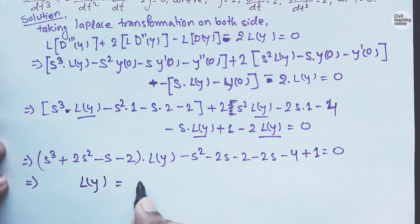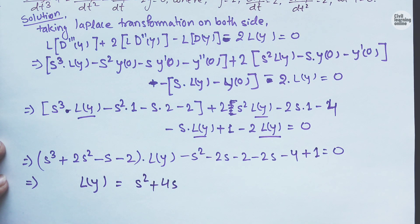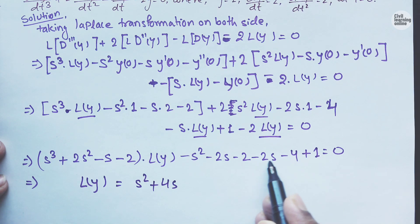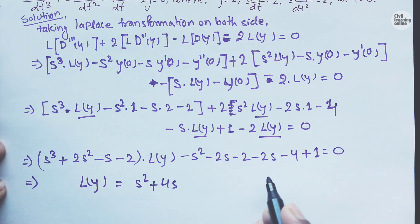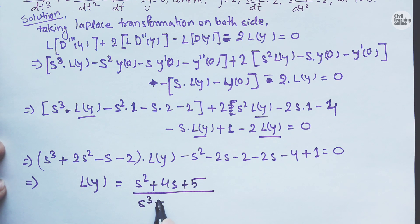Bringing the constants to the other side: L{y} equals (s² + 4s + 5) divided by (s³ + 2s² − s − 2). Wait — rearranging: the numerator becomes s² + 4s − 5, and the denominator is s³ + 2s² − s − 2.